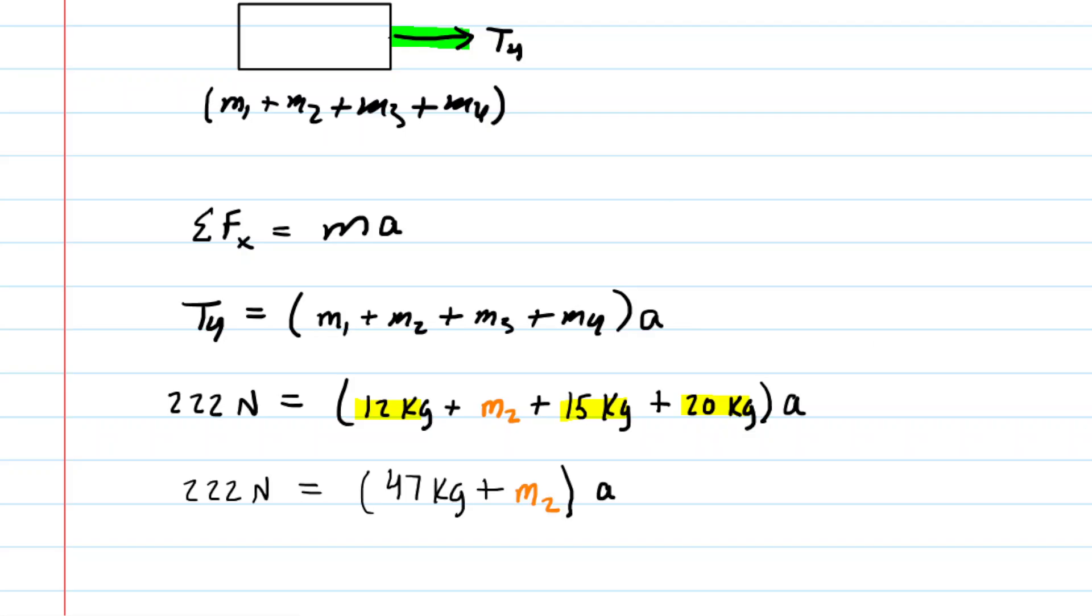Now, at this stage of the problem, we have two unknowns. We have m2 as well as the acceleration. So when we have two unknowns in a physics problem, we're, of course, going to need a second equation.